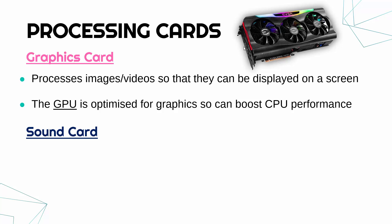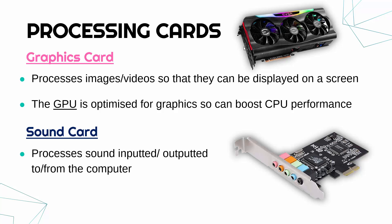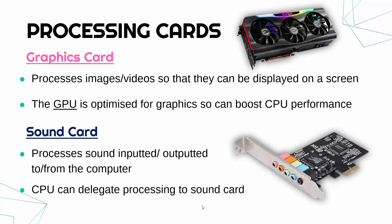A similar expansion card is a sound card. A sound card does the same job as a graphics card, just for sound instead of graphics — it processes sound inputted or outputted to or from the computer. One difference is that a GPU only deals with output, whereas a sound card handles both input and output: a microphone is an input device going into the sound card, and a speaker is an output device coming out. Usually this will be built into the CPU or often the motherboard, but if you have a dedicated one, the CPU can delegate processing to it.